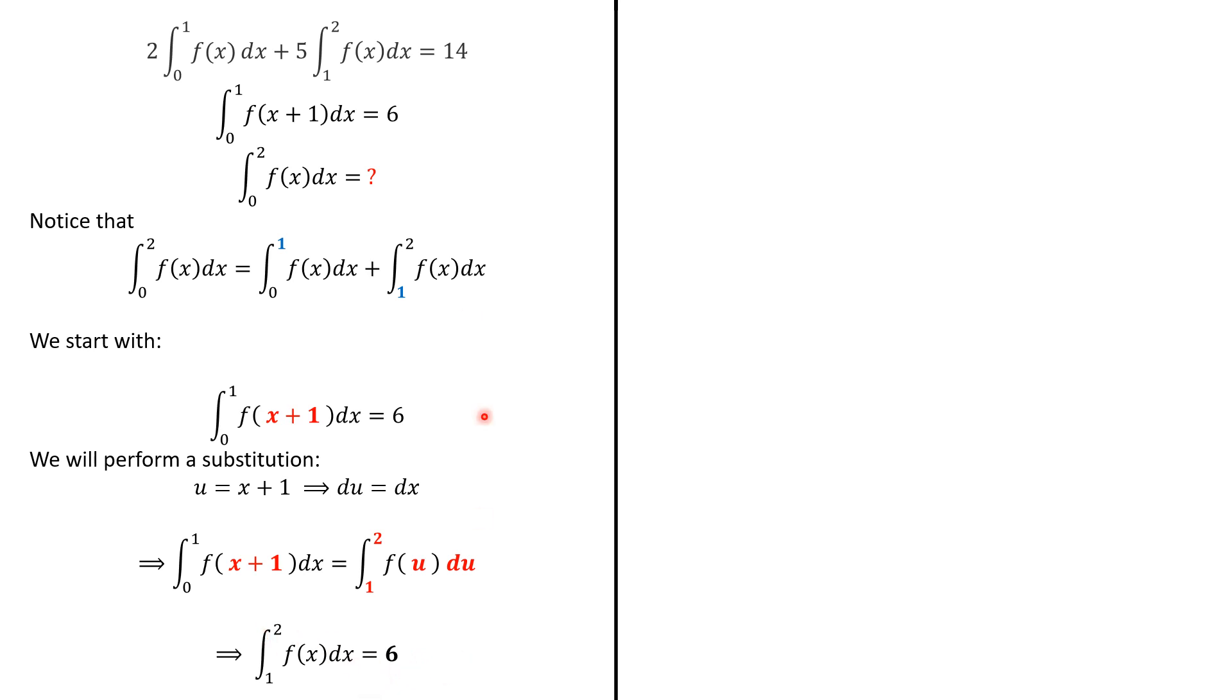So, replacing in this condition, we have this one. So we can deduce that 2 times the integral from 0 to 1 is 14 minus 30, which is minus 16. And then this integral from 0 to 1 is minus 8.